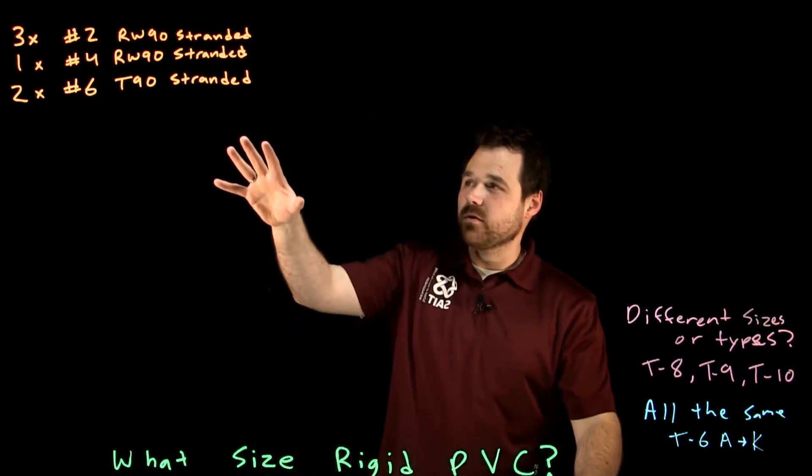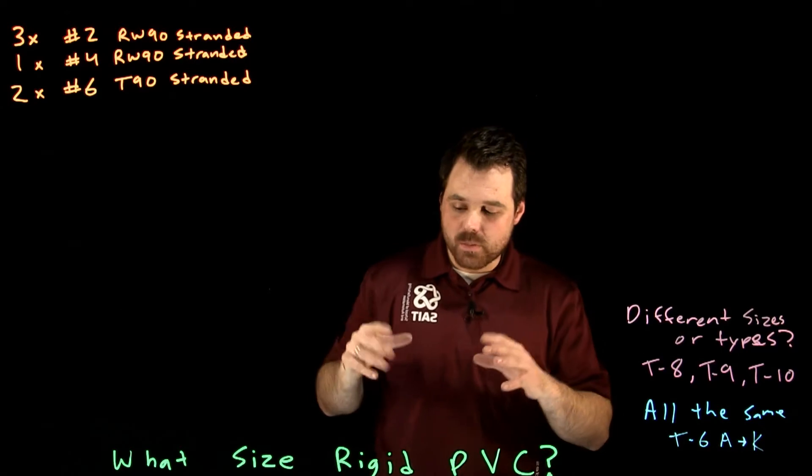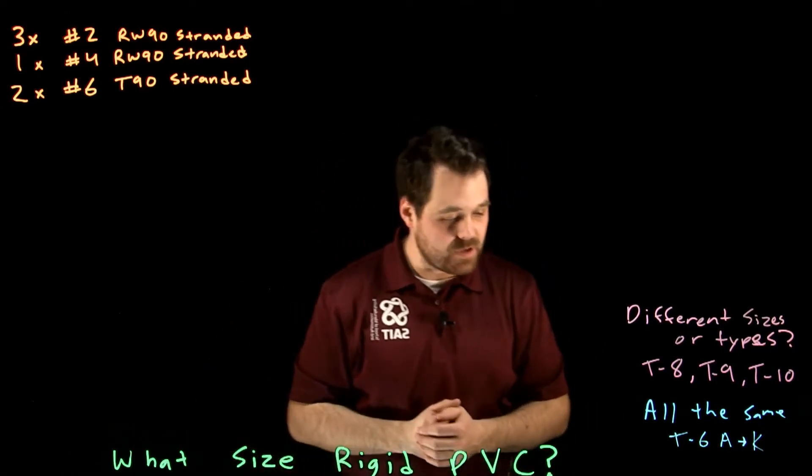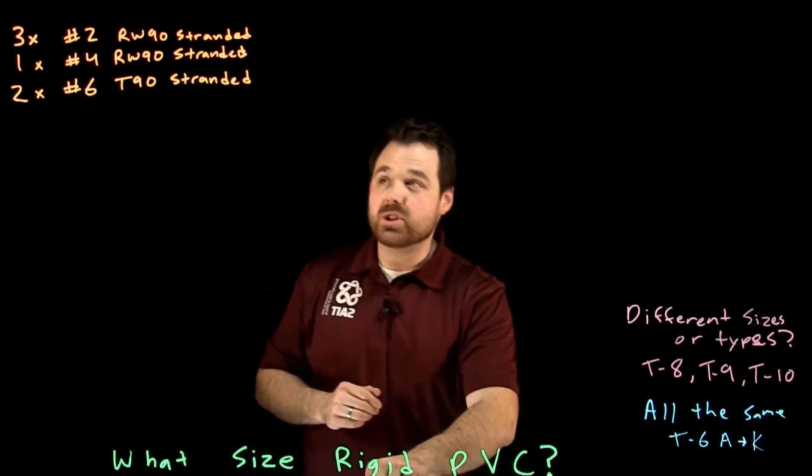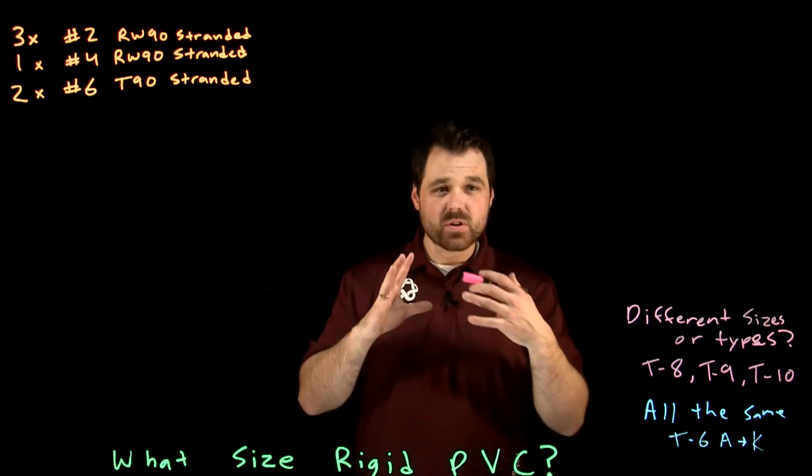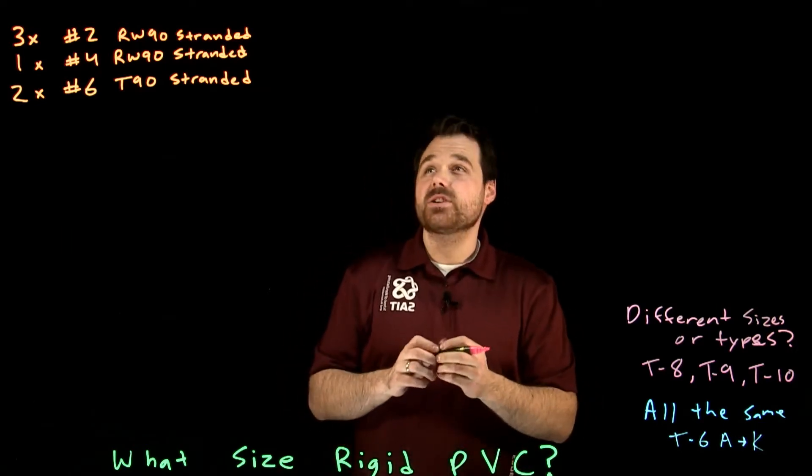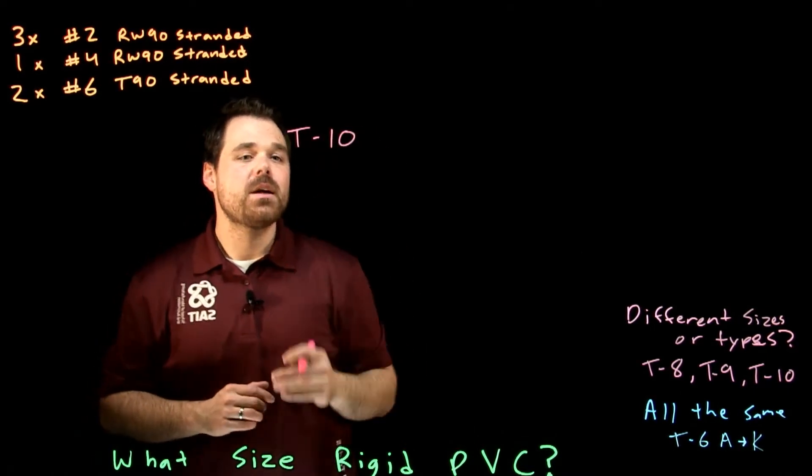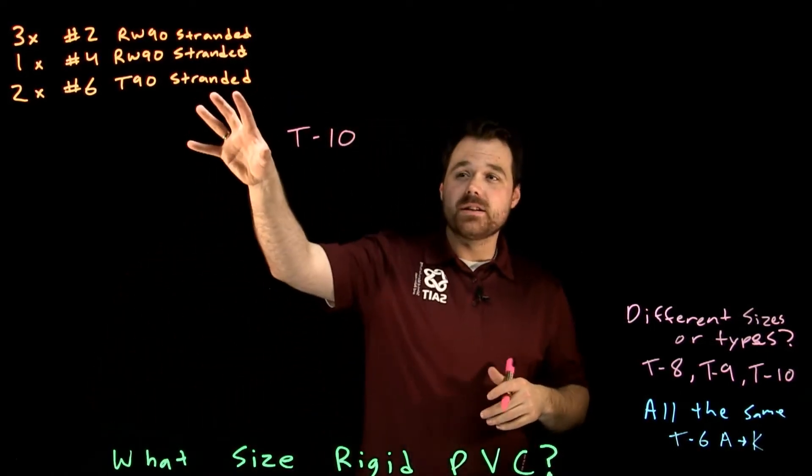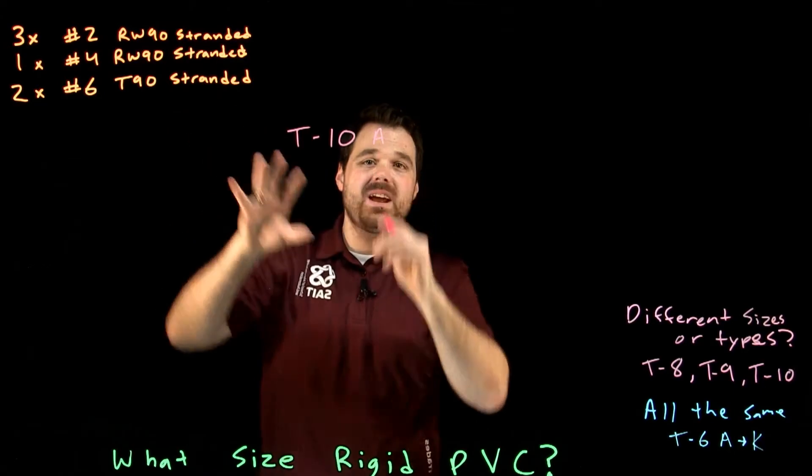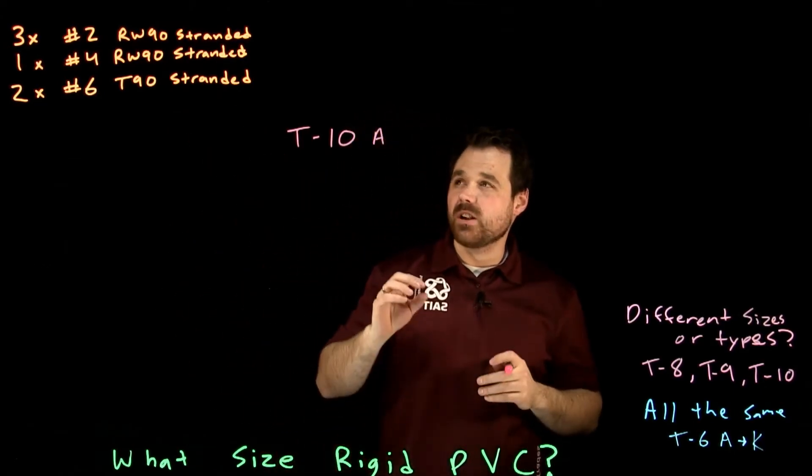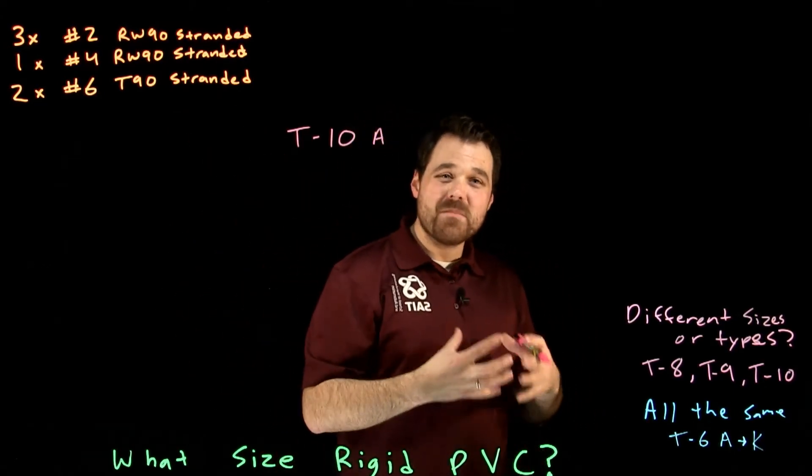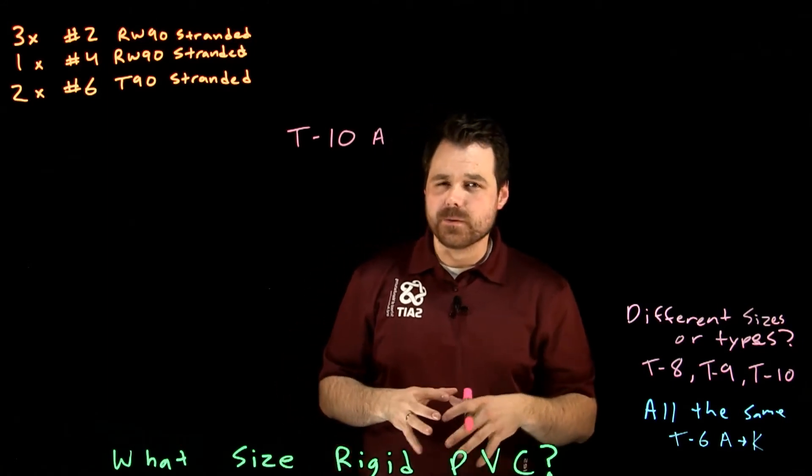So because we're using these different types of conductors, pulling it into a conduit, we want to figure out the rigid PVC for these guys. We have a couple steps we're going to follow. So first what we want to do is we actually first we need to go to table ten. Because these are stranded conductors, we're actually going to go to table ten A.